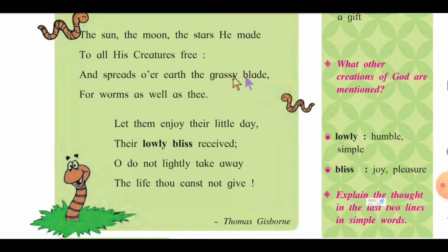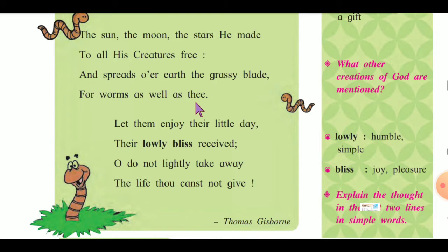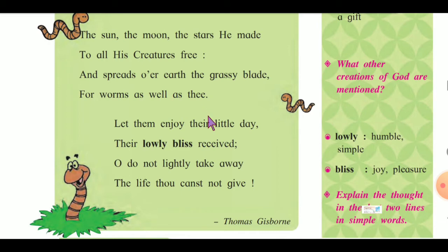And spreads over earth the grassy blade, for worms as well as thee. Yani ki is jameen pe, is earth pe jo grass ugti hai, woh bhi for worms as well as thee — 'thee' is also an Old English word meaning 'you'. Worms ke liye aur tumhare liye bhi, jo grassy blade jameen pe ugti hai, woh sab ke liye hai.